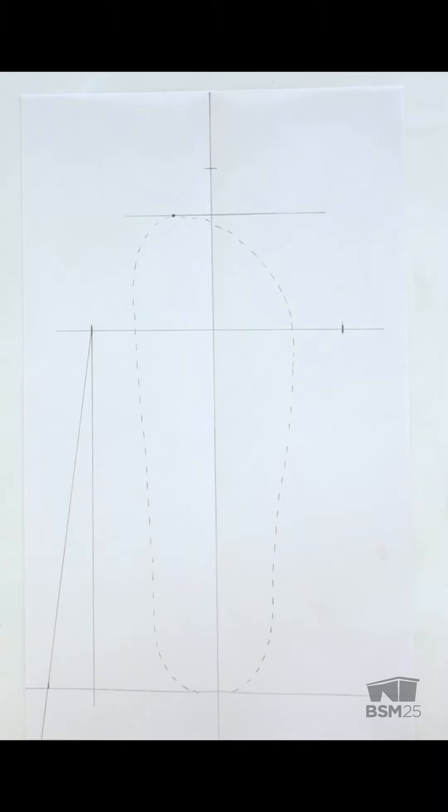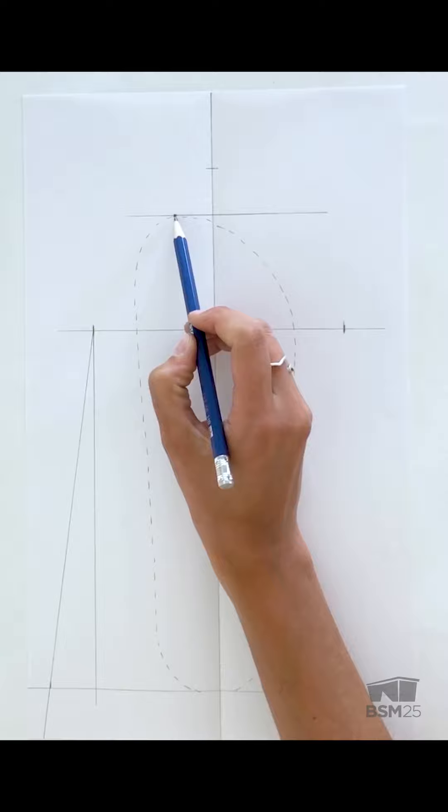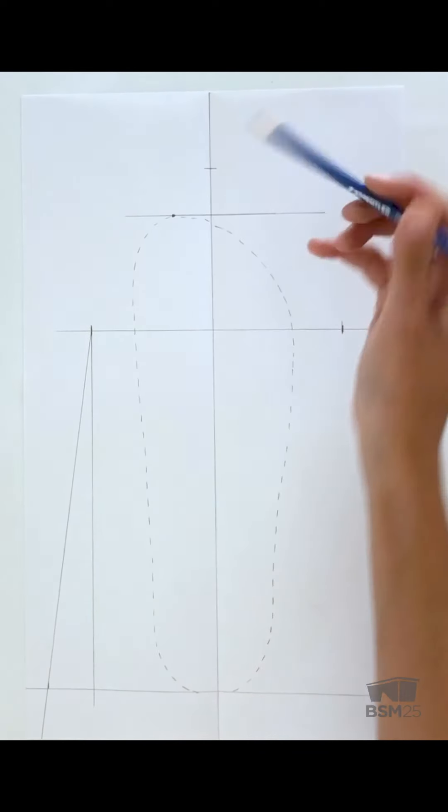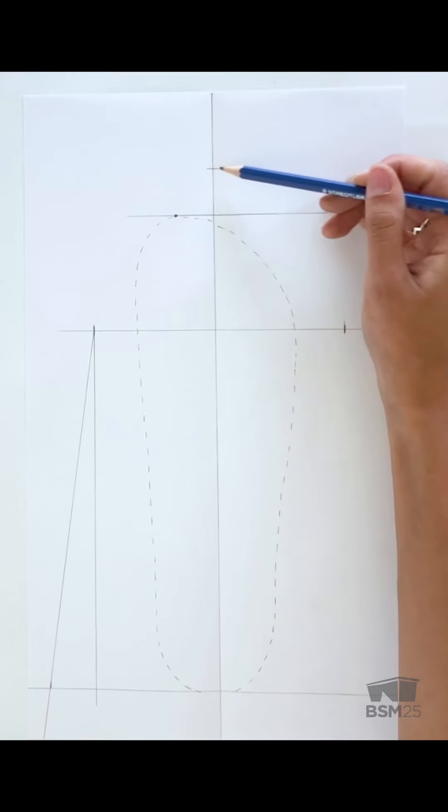We're now going to draw in our guidelines. Our first guideline is at the toe. Draw a horizontal guideline through the center line. Where the lines intersect, we're going to measure 1 inch up and draw a little tick mark.